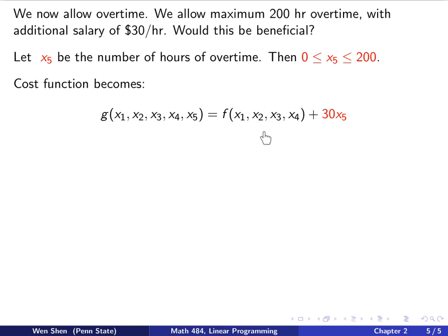Let's see how we should modify the cost function. We call the cost function now g. All the costs that occurred in the first version of the model, the simpler one, is still here. But then here we have an additional term caused by the additional salary for the overtime. If we have x5 hours of overtime, then we'll have to pay 30 x5, remember 30 is the unit. That's the additional cost that will occur for us. This will be the new cost function.